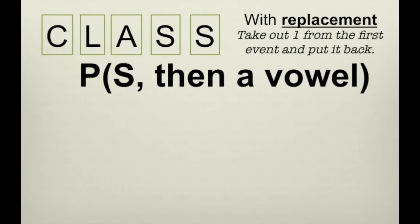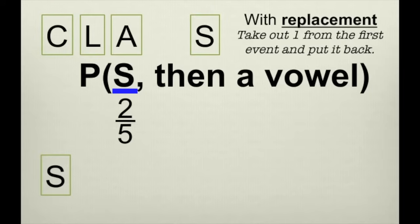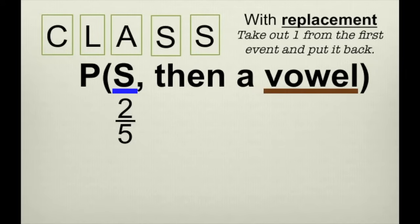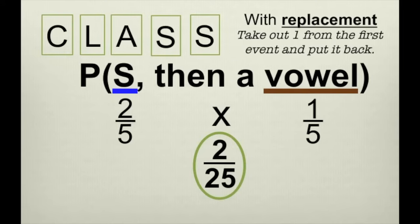What's the probability of drawing an S and then drawing a vowel? There are two S's out of five letters, so the probability of drawing an S is two-fifths. We replace the S, so we still have CLASS. The only vowel is A, so the probability of drawing a vowel is one out of five. We multiply two-fifths times one-fifth and get two twenty-fifths.